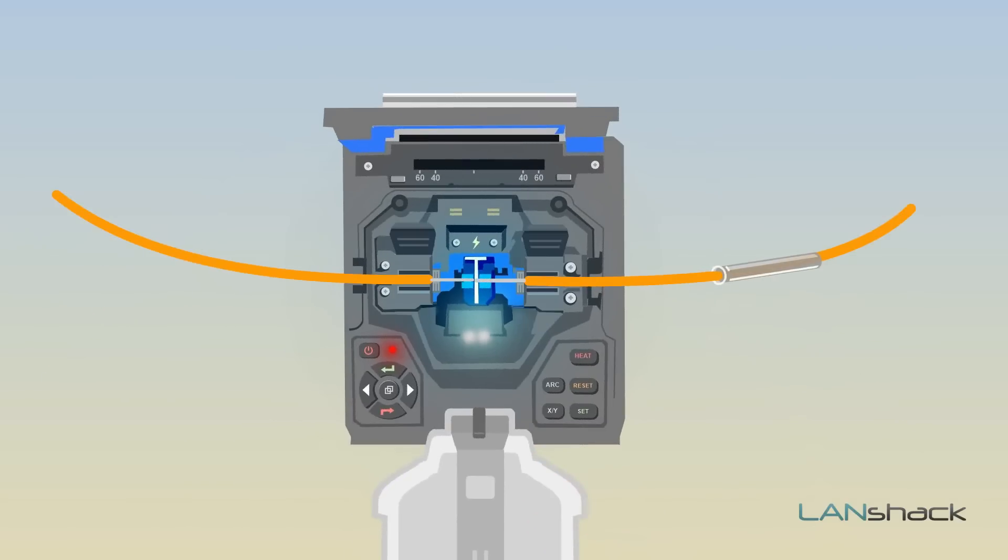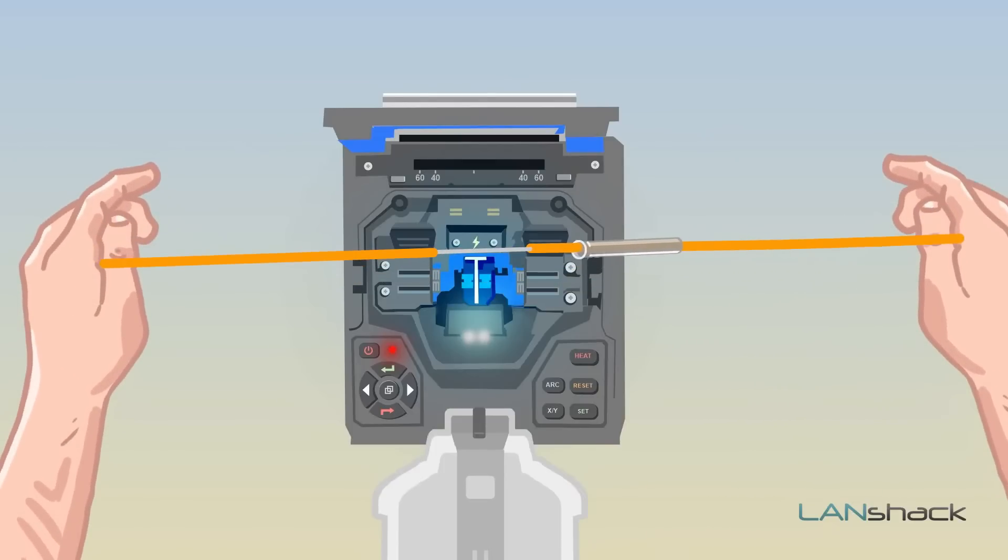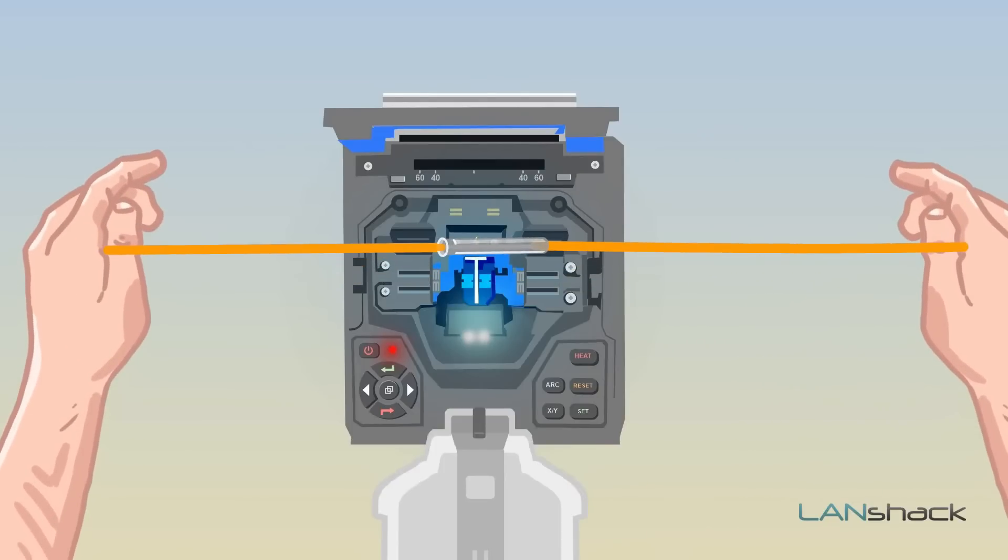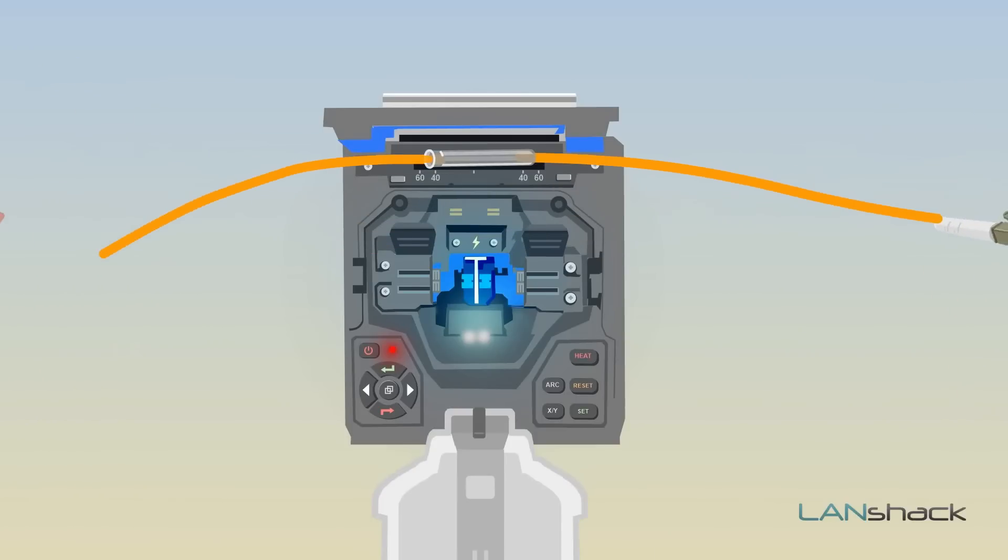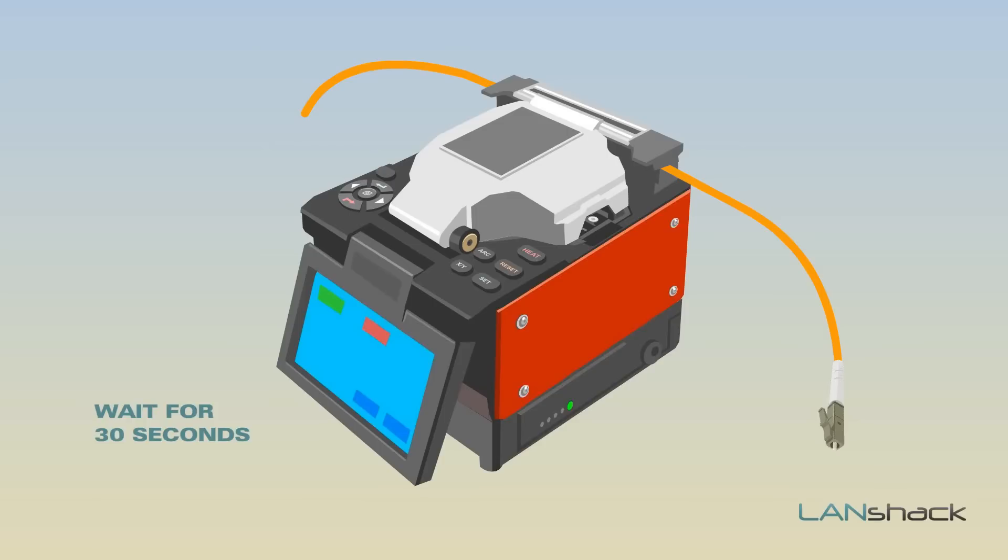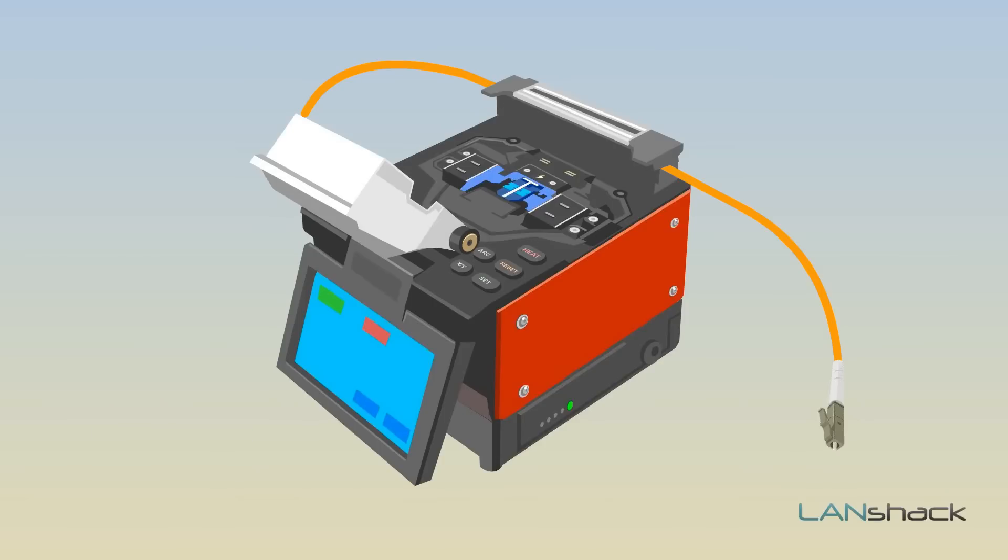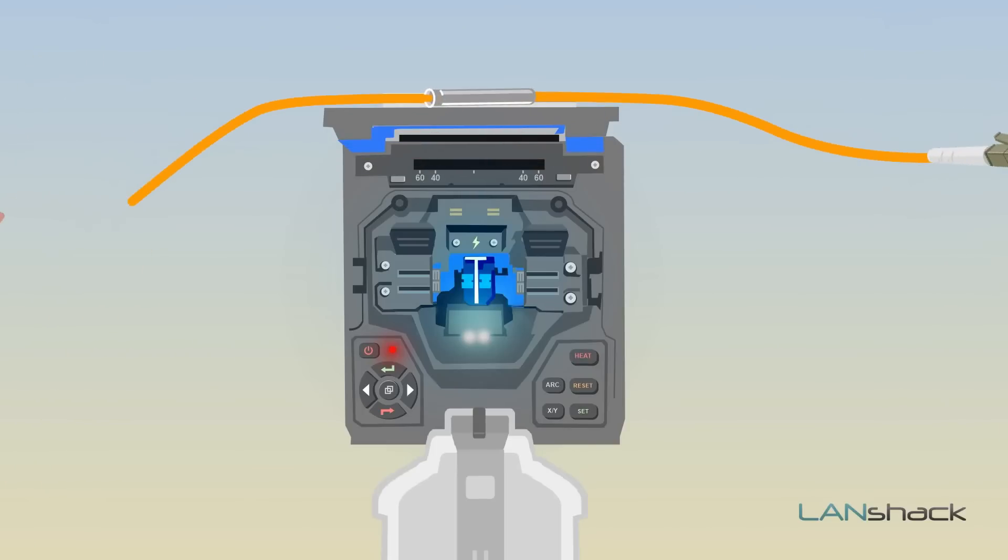Open up both clamp-style fiber holders and slide the protection sleeve up in between both fibers to cover the exposed fusion splice. Put the sleeve in the protection sleeve heater. Close the lid and the sleeve will set automatically. This will take about 30 seconds. Once the unit beeps to indicate it is complete, move the fiber to the cooling tray and you're done.